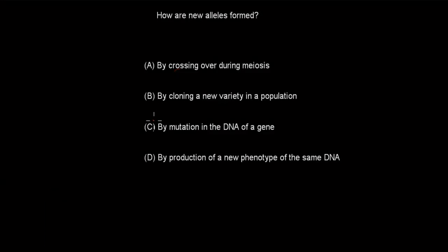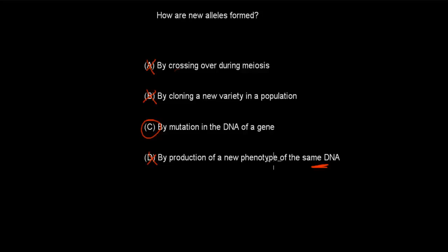Welcome back. The correct answer is C. A is wrong because crossing over gives more variety but doesn't change the actual allele — it just shuffles alleles around. B is wrong because cloning doesn't produce anything new; it just copies the same one over and over. D is wrong because producing a new phenotype from the same DNA doesn't create new alleles — that might be the environment changing the phenotype, but the DNA itself stays the same. Mutations do actually lead to new alleles, so C is correct.